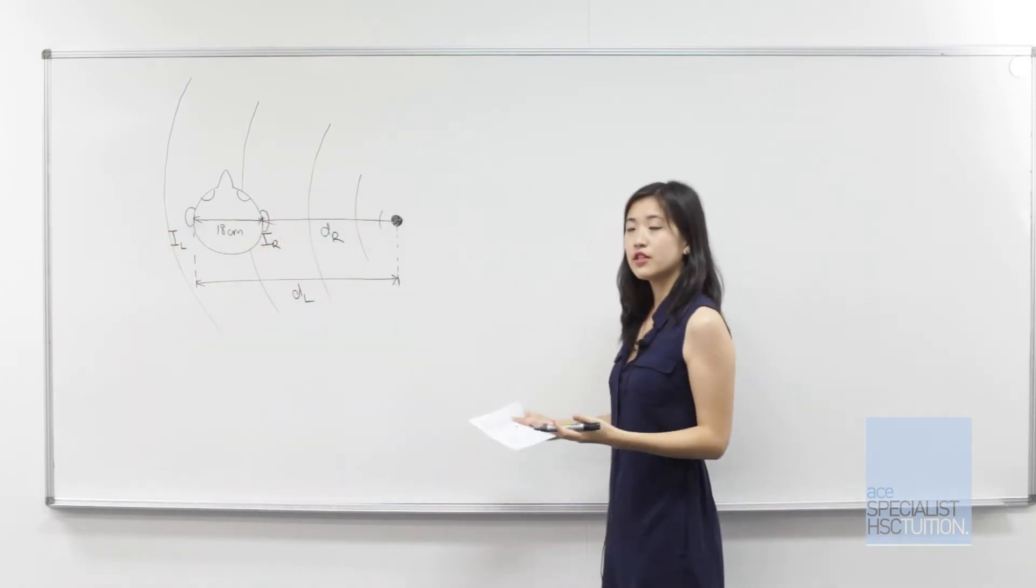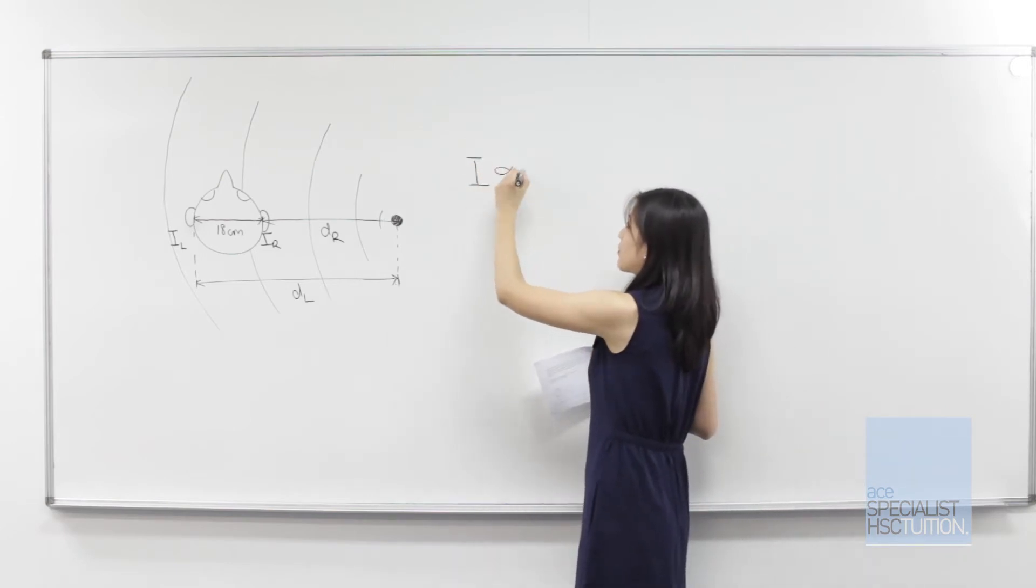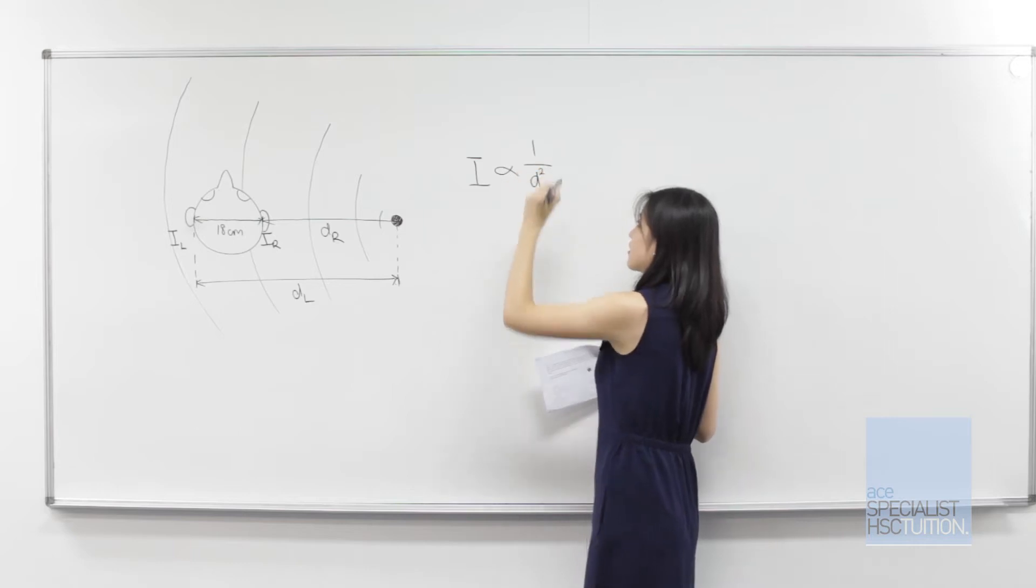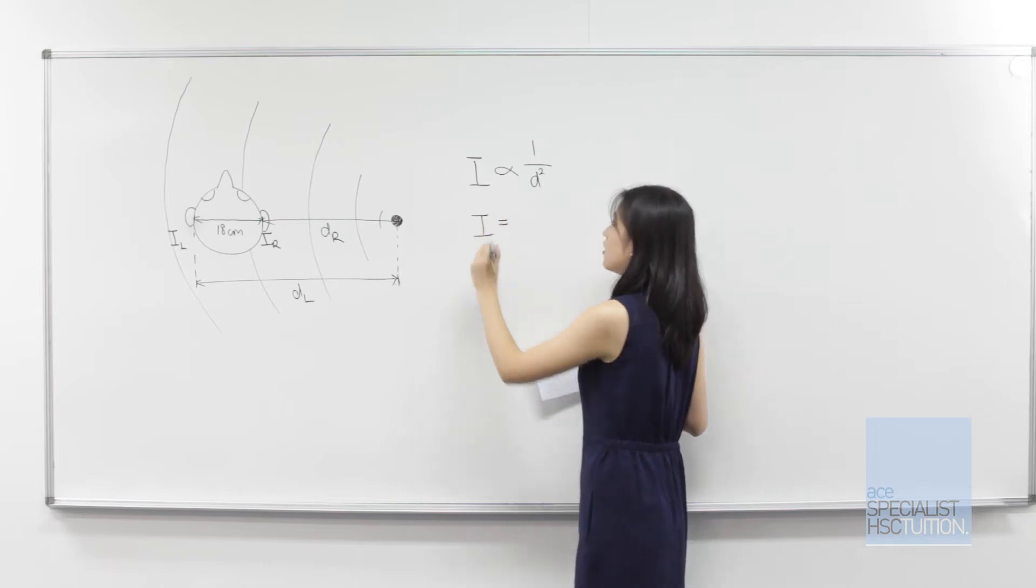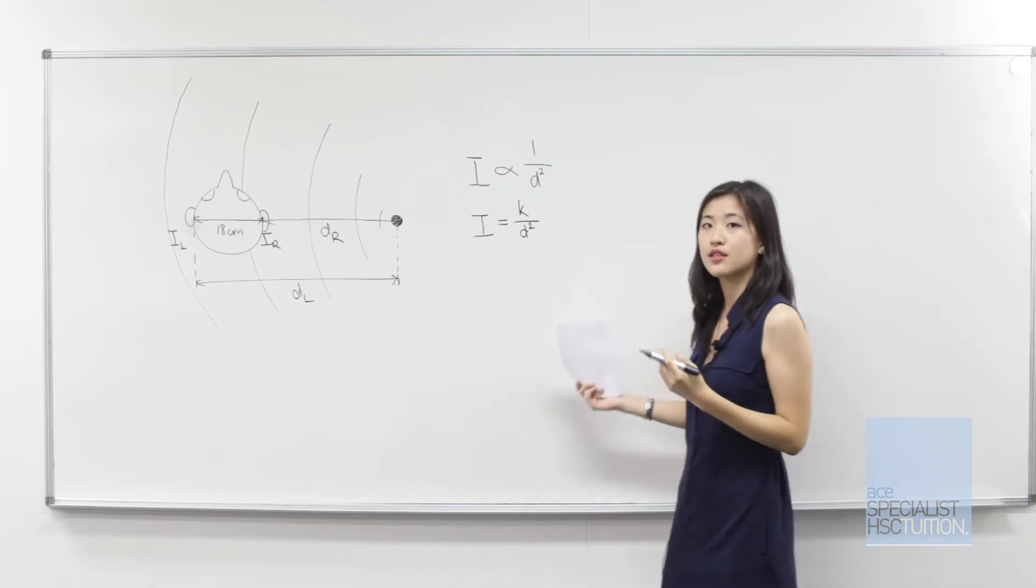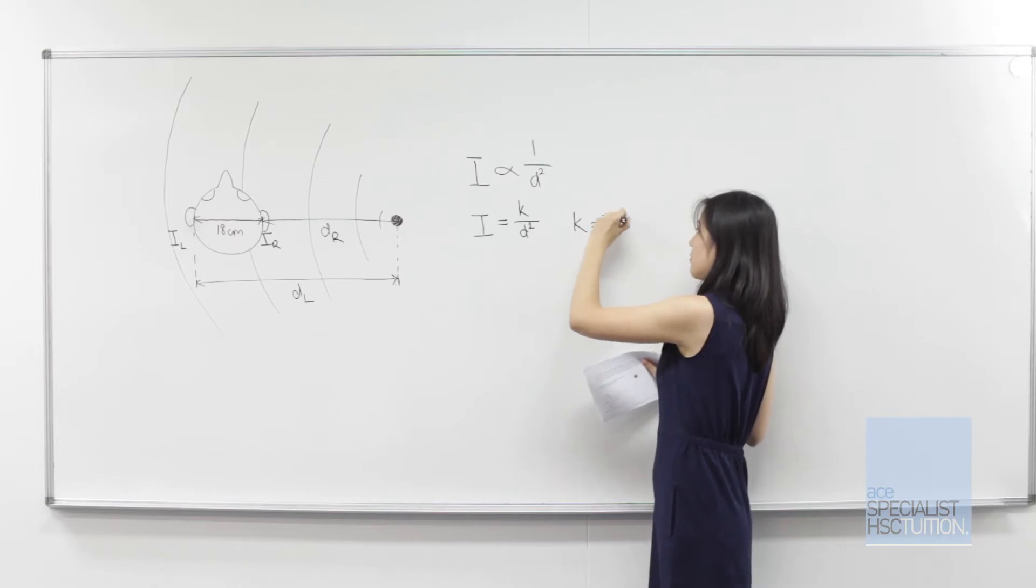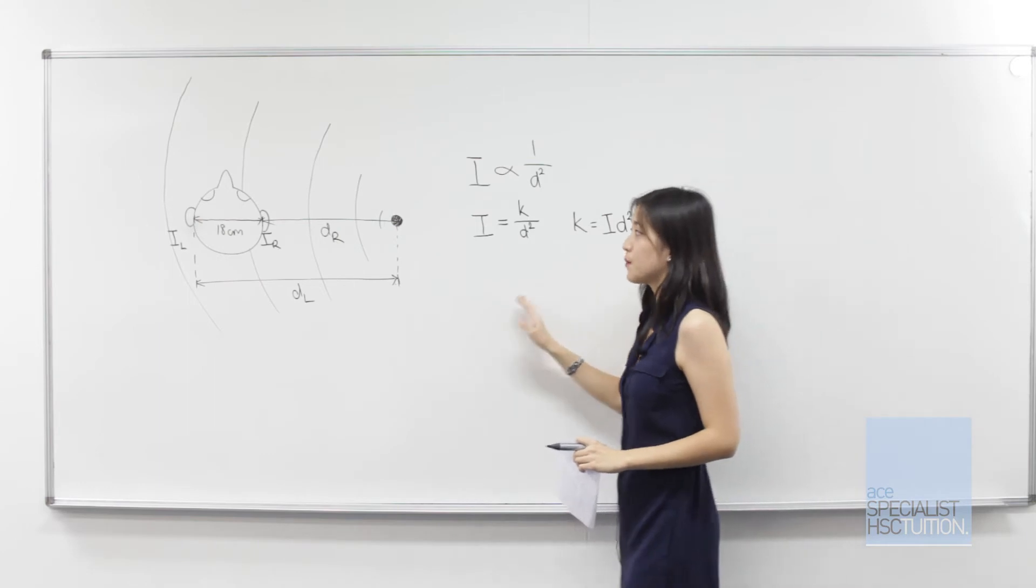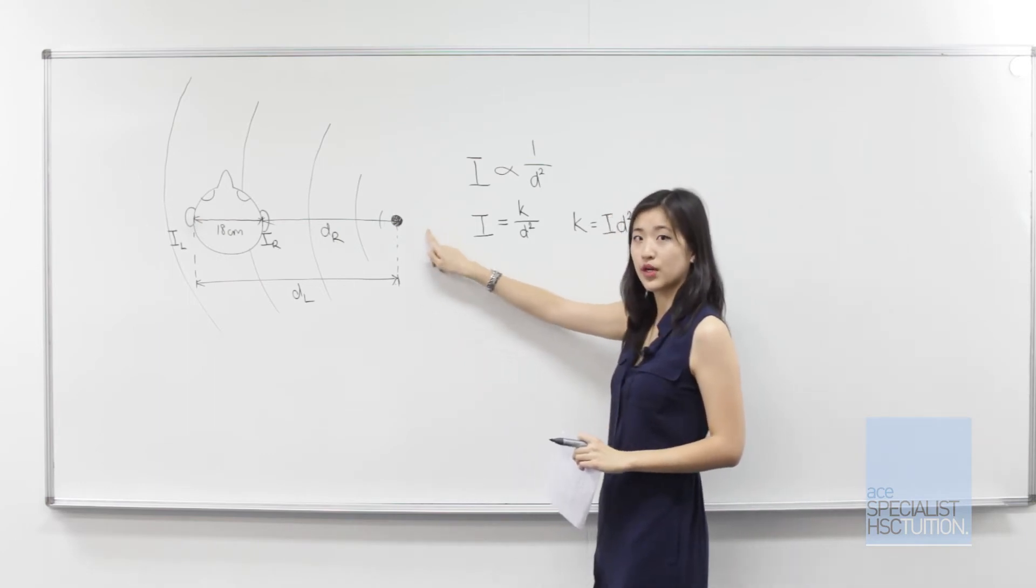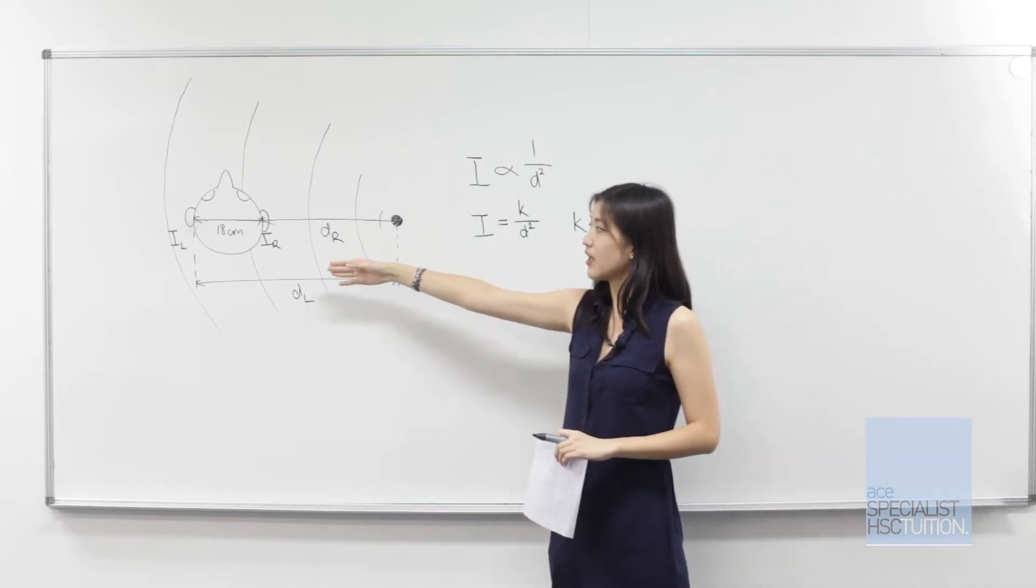Now the inverse square law states that the intensity of a wave is proportional to 1 over the distance squared. If we convert this proportionality into an equation, we can say that i is equal to k over d squared where k is the constant of proportionality. In other words, k equals i multiplied by d squared and k is a constant fixed value for a particular sound source.